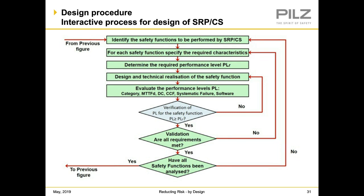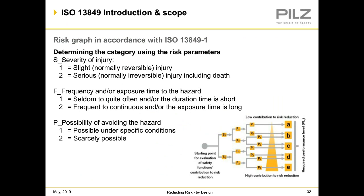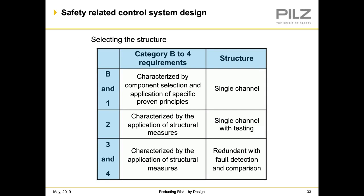To determine the performance level required, you can turn to one of the annexes in ISO 13849-1, which covers safety-related parts of the control system. We use three parameters: severity of injury, frequency and duration of exposure, and possibility of avoidance. From these we get performance levels A, B, C, D, and E. To make up those performance levels, we can choose different types of circuit architecture. We have five types: Category B and Category 1, both single-channel using component selection and proven principles; Category 2, single-channel with testing; and Category 3 and 4, which are dual-channel with redundancy, fault detection, and comparison.